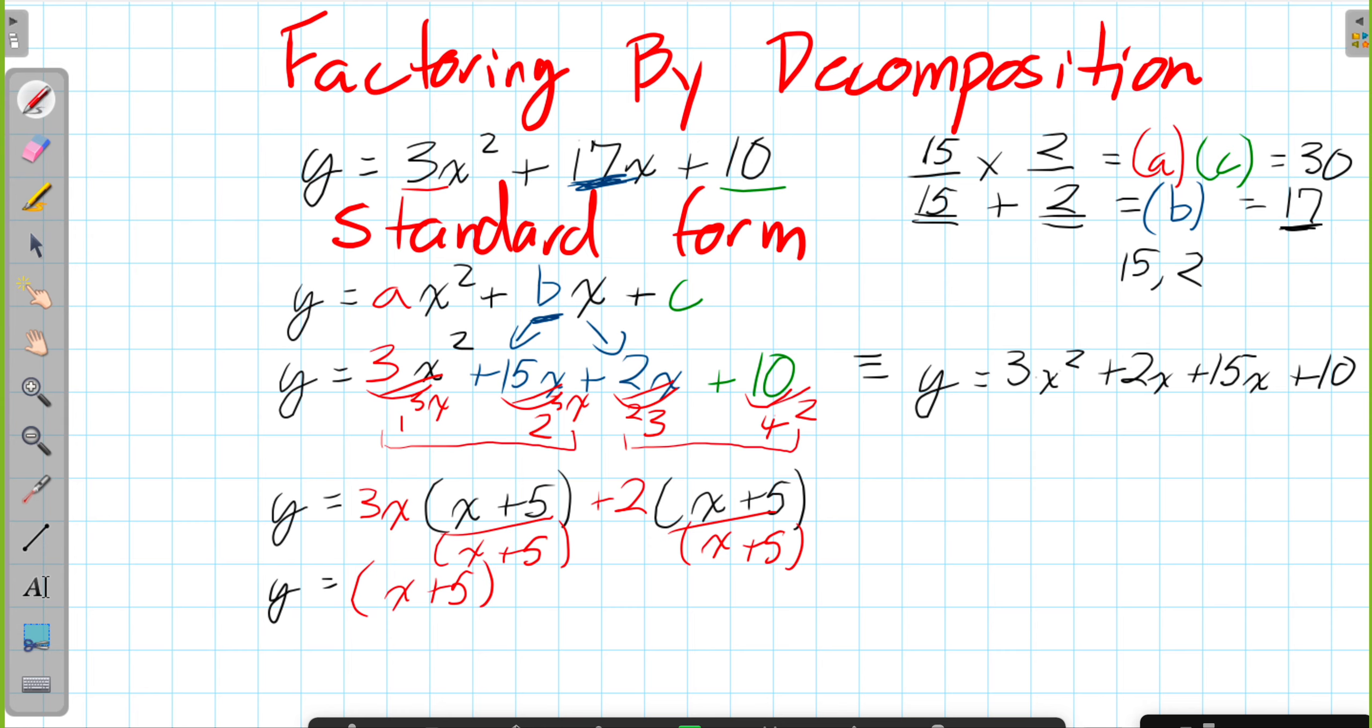We've common factored X plus 5, and when we take those out, we're left with 3X and plus 2. And this is our factored form of this standard form.